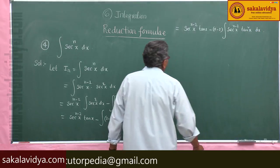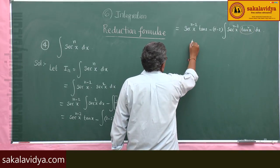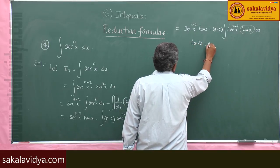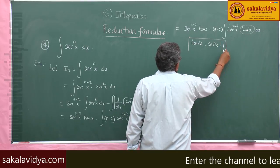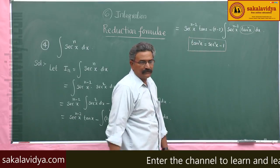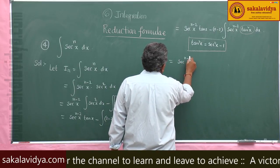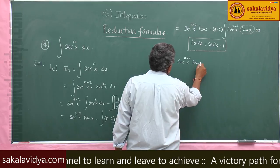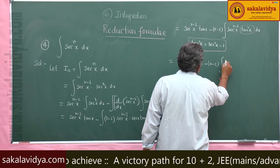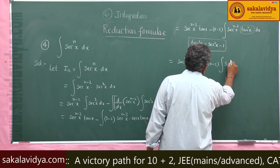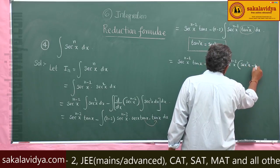Now, again this tan²x. The tan²x we can write as sec²x minus 1, using trigonometry. So this is equal to sec^(n-2) x tan x, minus (n-2) integral of sec^(n-2) x times (sec²x minus 1) dx.